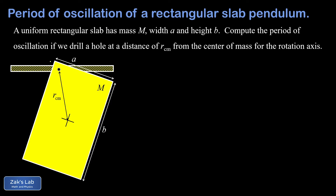The separation distance between the rotation axis and the center of mass of the slab is written as r_cm, standing for the distance to the center of mass. This video is the culmination of several calculations we've already completed to build up to the point where we're ready to actually compute the period of oscillation, and I'll post links to those videos as we review those old ideas.